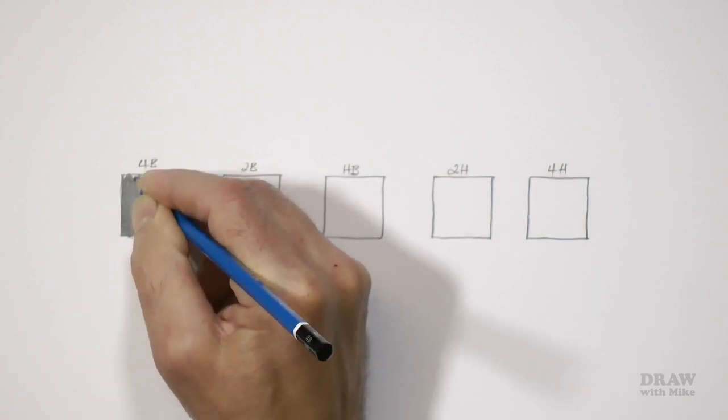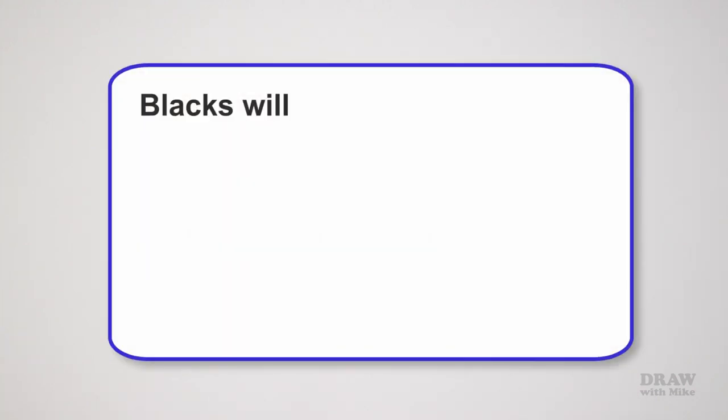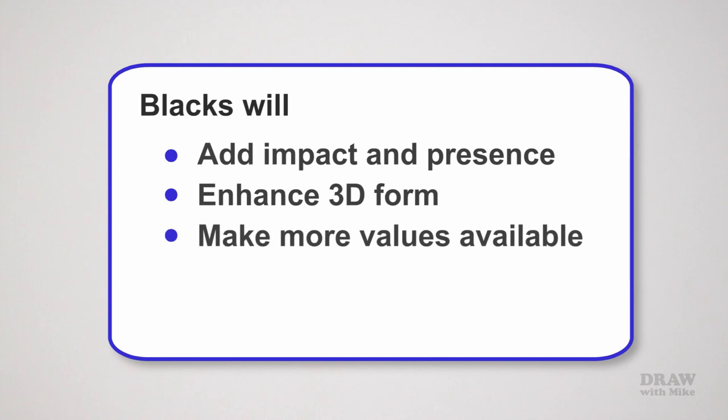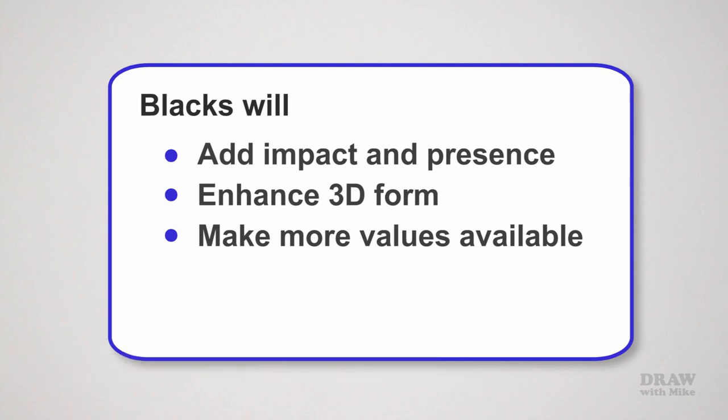There's a reason that I'm insisting on your blacks being black. They need to be as dark as possible because they will add impact or presence to your work. The 3D information will be increased by the strong contrast and shadows, and you'll have a much wider range of values to work with. Your drawing has to be between the white of the paper and your darkest value. And if the darkest value is mid-grey you'll only have white to mid-grey to work with, and that tends to lead to a very flat drawing.